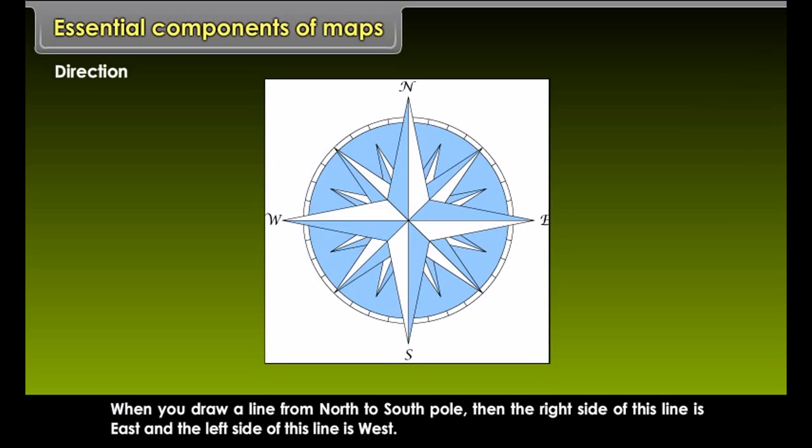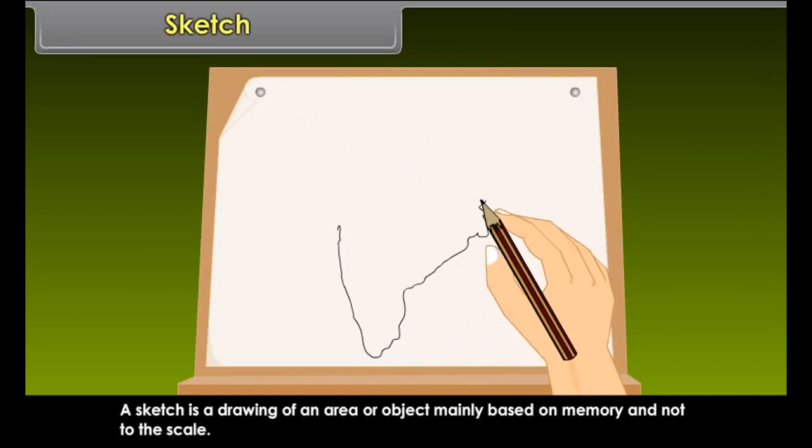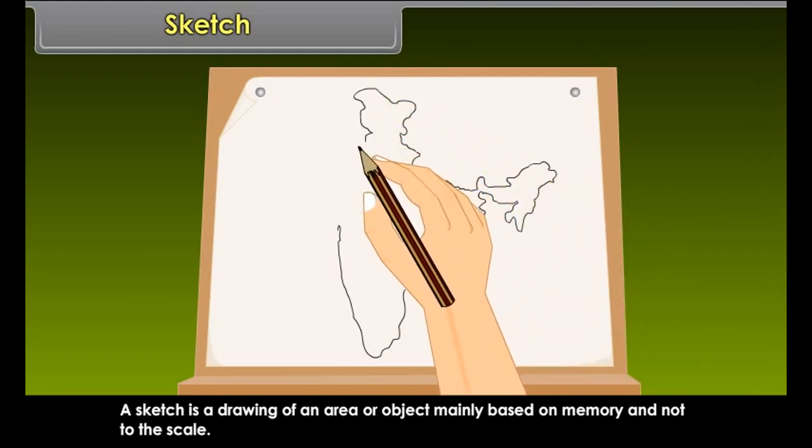The earth rotates around its axis, and it has two poles. The two poles are fixed points. They are taken as north and south points.